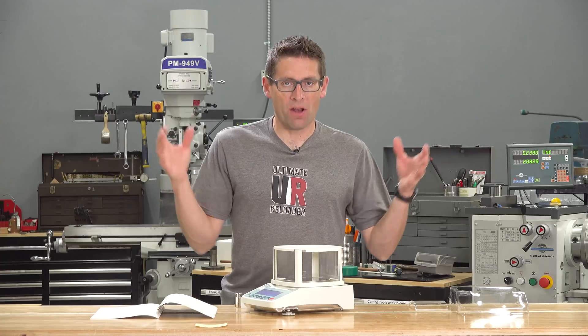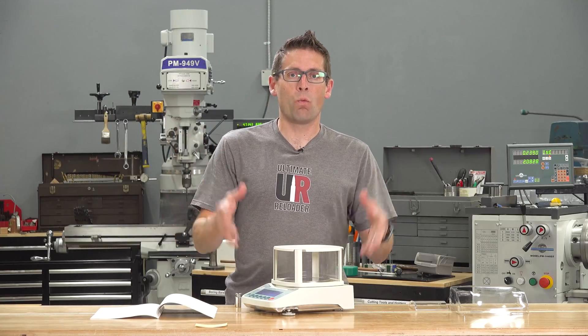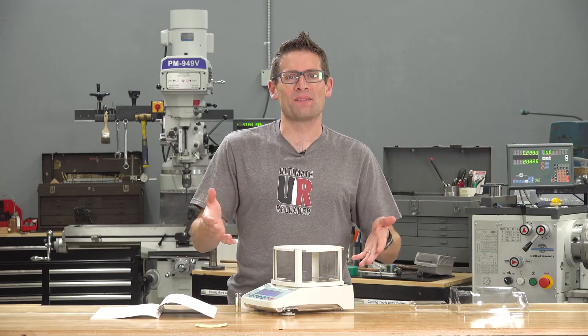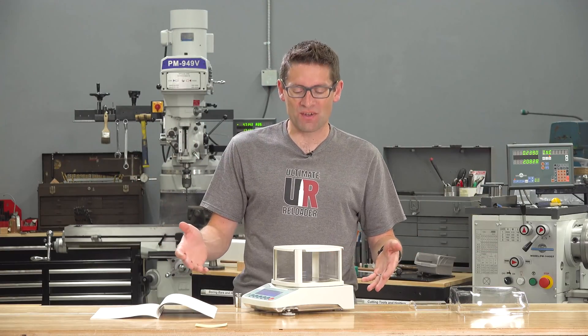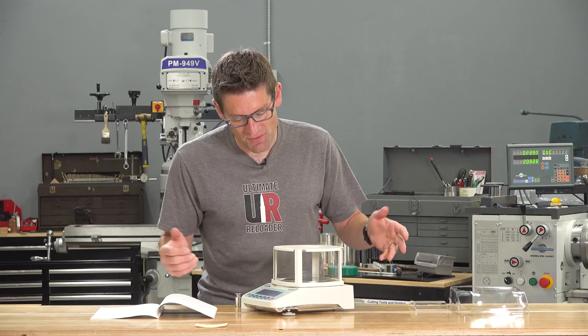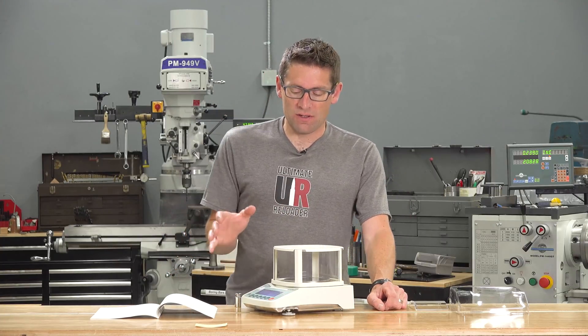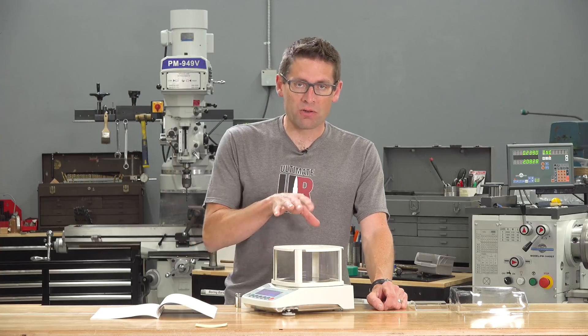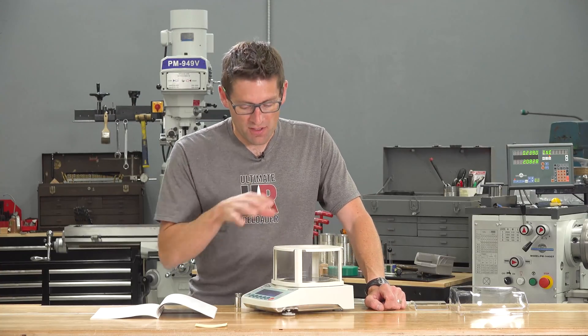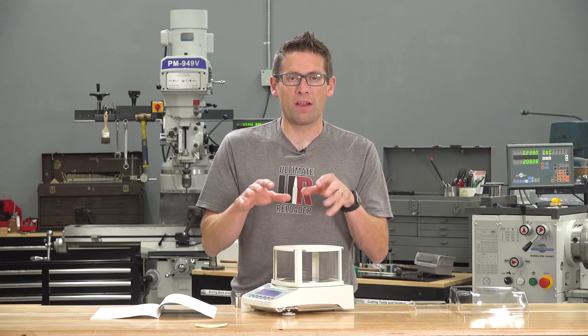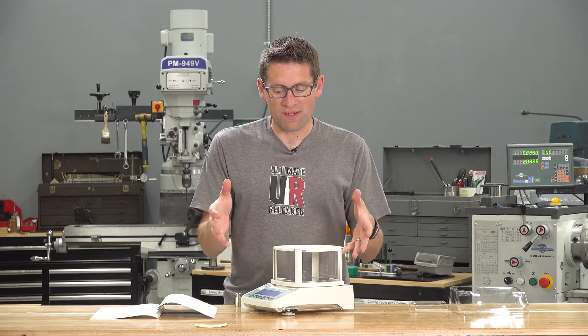So I've had this scale plugged in and it's been on for at least a half an hour. That means it's warmed up and ready to calibrate. Actually, it's not really a scale, it's technically a balance. But we all call these scales in the precision reloading world, so I will use that terminology. Now we can calibrate and there's two ways that we can do this. We can use the internal calibration routine, which is just to take everything off the pan and then to hit the Cal button.